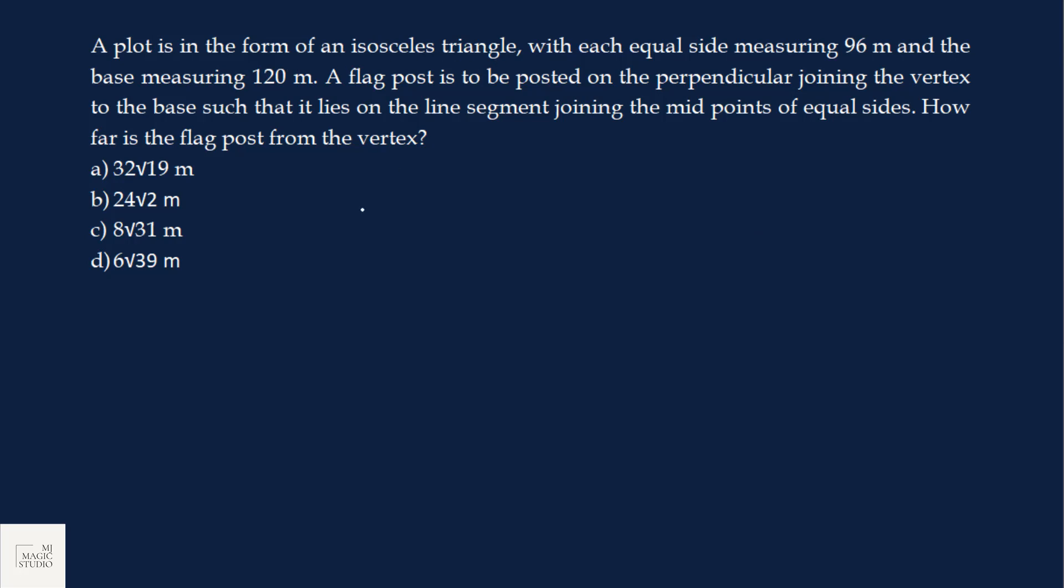A plot is in the form of an isosceles triangle. Two sides equal and third side is not equal. With each equal side measuring 96 meters and the base measuring 120 meters. A flag post is to be posted on the perpendicular joining the vertex to the base. Perpendicular joining the vertex to the base will always be meeting at the midpoint of an isosceles triangle. This is 60, this is 60. Such that it lies on the line segment joining the midpoints of equal sides. Midpoints of equal sides, if I join it, flag it at this point A.